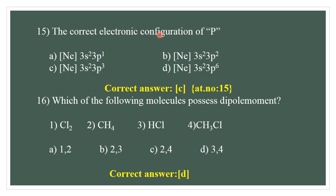The correct electronic configuration of phosphorus — atomic number 15. Neon configuration accounts for 10 electrons. The remaining 5 electrons go into the 3rd shell. The correct answer is C.